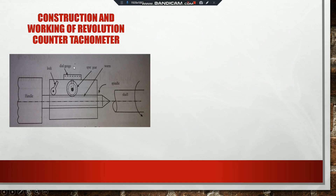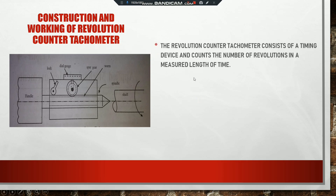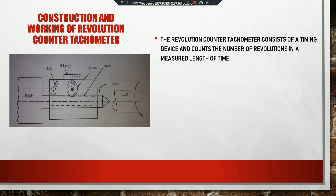This is the diagram of a revolution counter tachometer, and here we are discussing about the working and construction of it. The revolution counter tachometer consists of a timing device and counts the number of revolutions in a measured length of time. It is used to measure the RPM of a shaft — RPM means revolutions per minute.